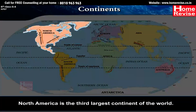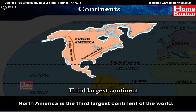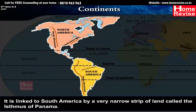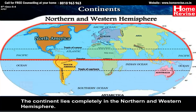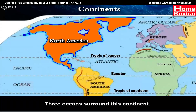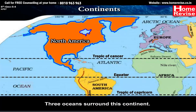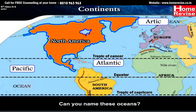North America is the third largest continent of the world. It is linked to South America by a very narrow strip of land called the Isthmus of Panama. The continent lies completely in the northern and western hemisphere. Three oceans surround this continent. Can you name these oceans?